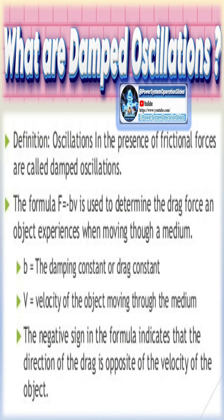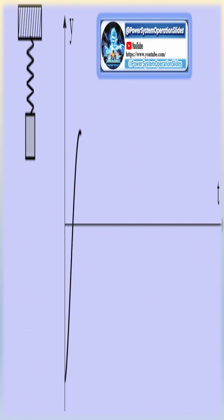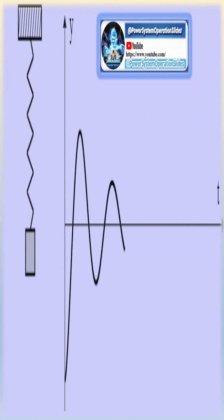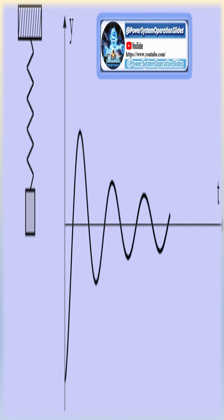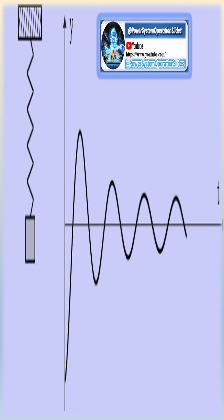An example of this is a swinging pendulum that eventually slows down and stops. Undamped oscillations occur if energy losses in a system are fully compensated — the amplitude of oscillation remains constant, leading to undamped oscillations.